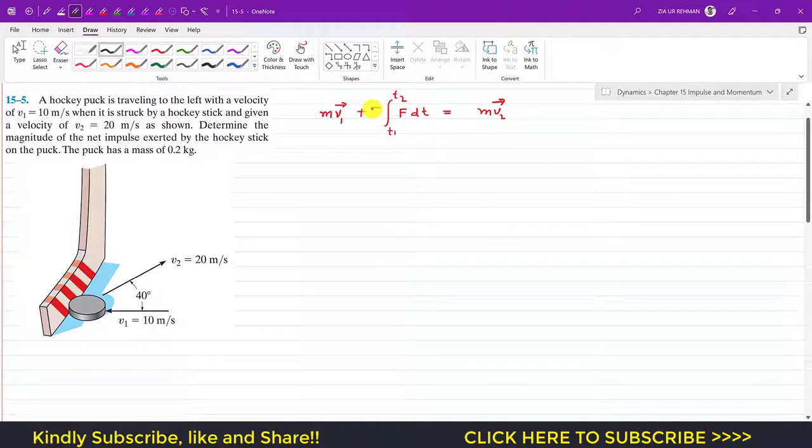It says that the summation of all the impulses, this is the net impulse, right? So we can replace this term by net impulse. I will write this as mv1 vector, I am considering this as a vector addition since all these are vectors. So this is mv1, this is I_net which is required, and this is mv2.